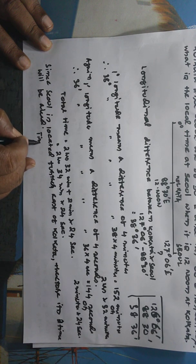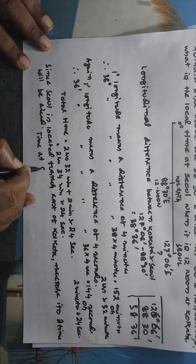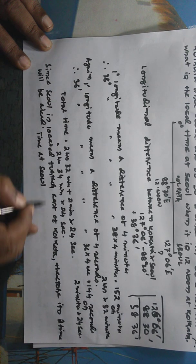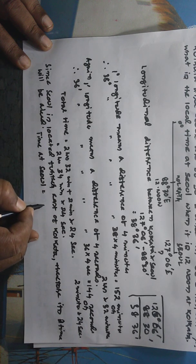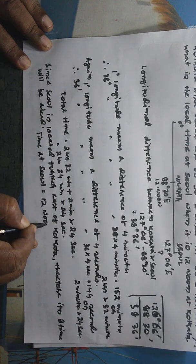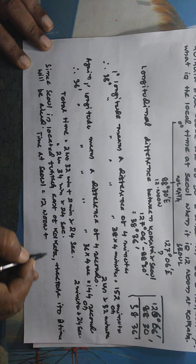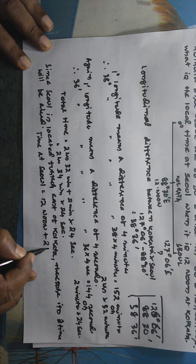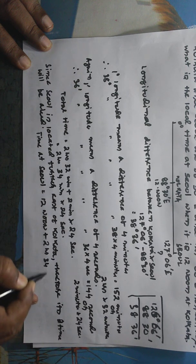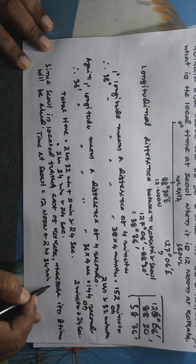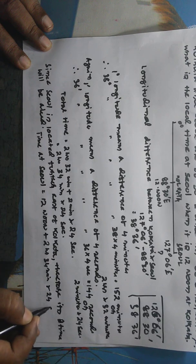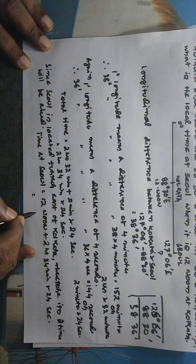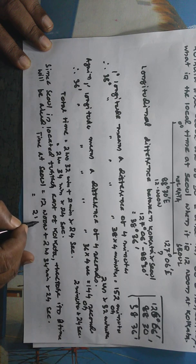Time at Seoul, that is 12 noon plus 2 hours 34 minute and 24 seconds. It will come to 2:34:24 PM.